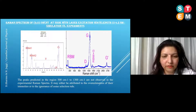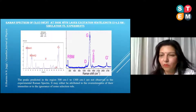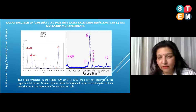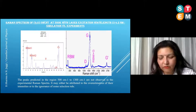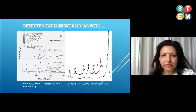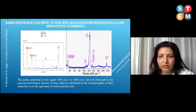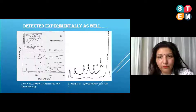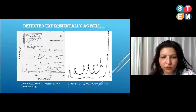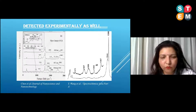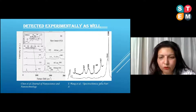The peaks predicted in the region 500 to 1300 cm⁻¹ are not observed in the experimental Raman spectrum. We suggested this may be attributed to overestimation of phonon intensities or to ignorance of some selection rules. However, I found a paper showing that these peaks between 500 and 1300 cm⁻¹ are actually observed when using a sensitive spectrophotometer, reported in Spectrochimica Acta Part A. There are certain peaks in this region that we predicted theoretically; the only difference is that the intensity of our predicted spectrum is slightly higher — these are actually very low intensity peaks.